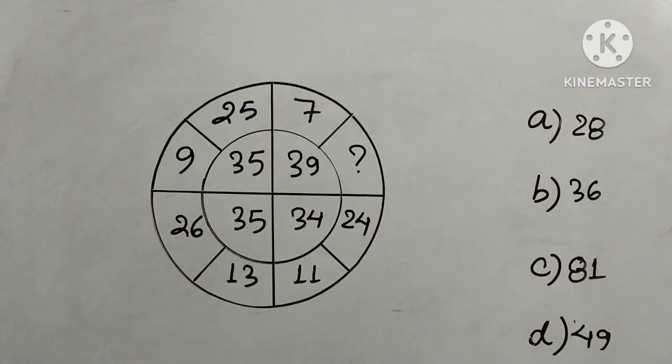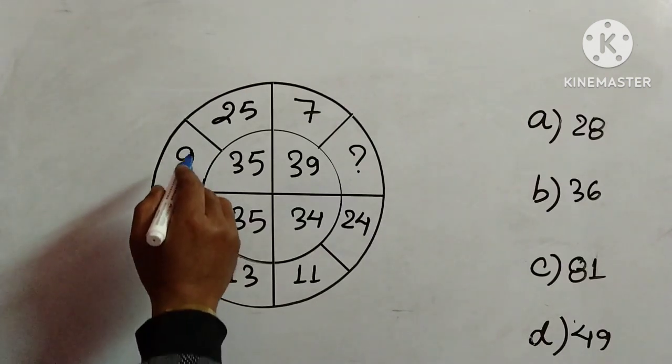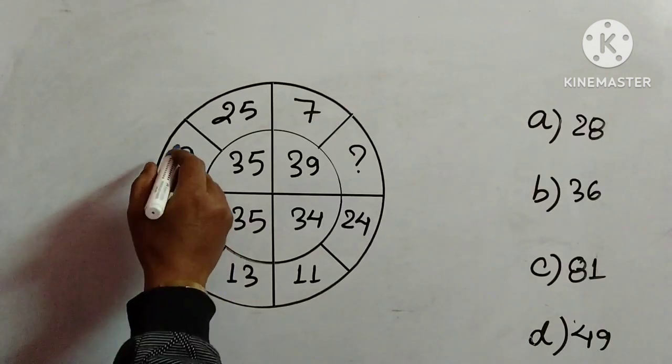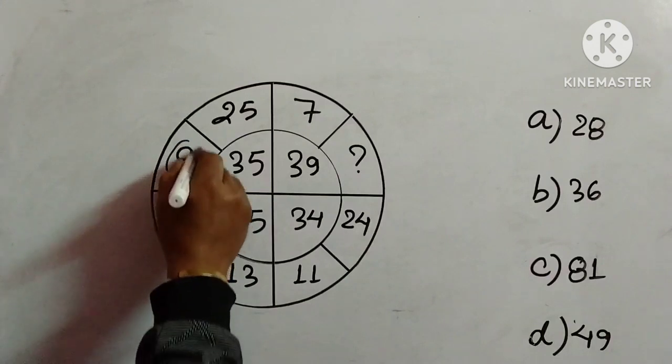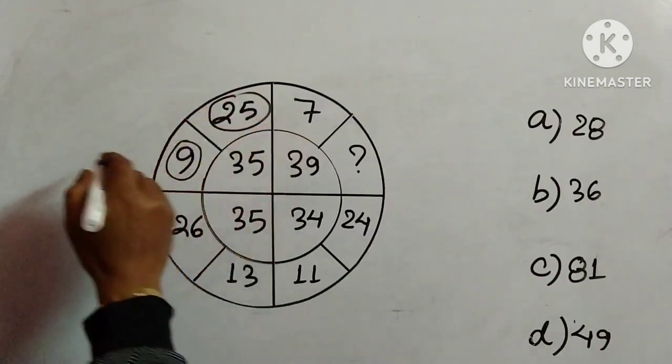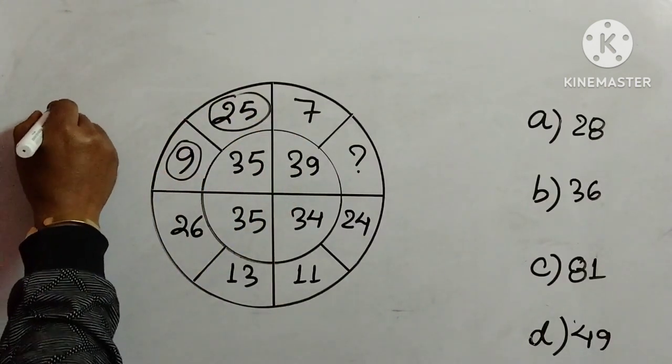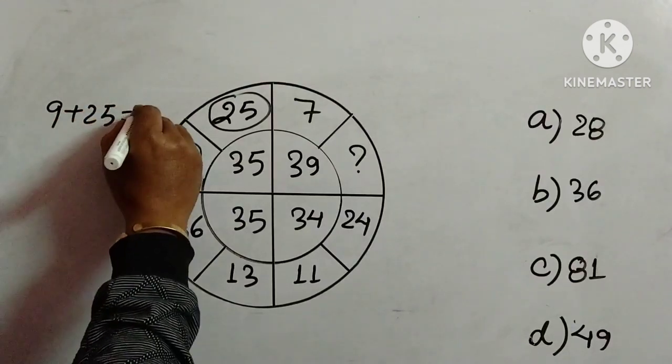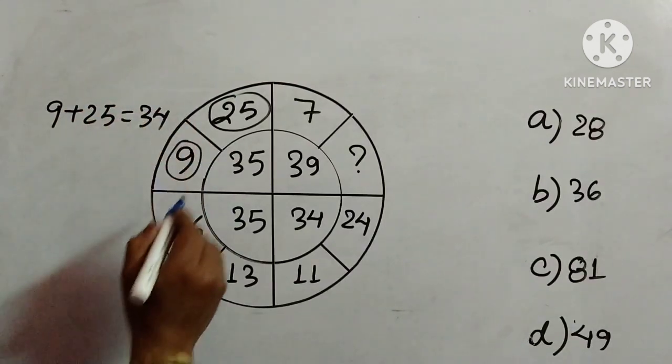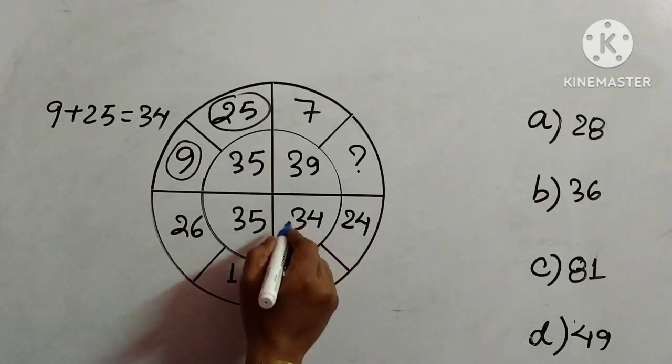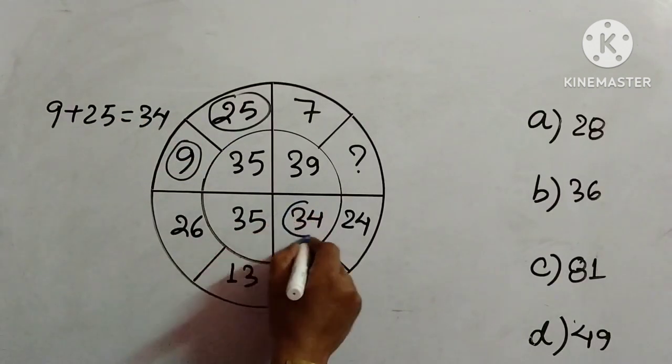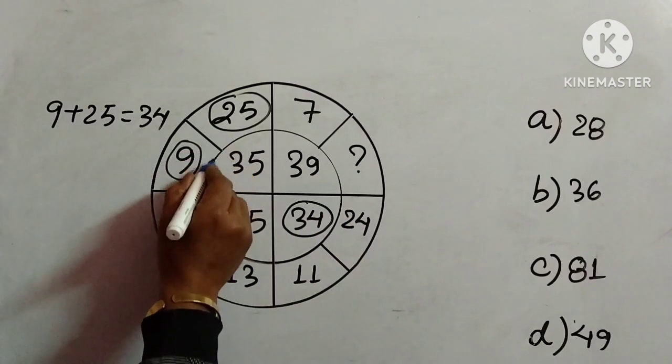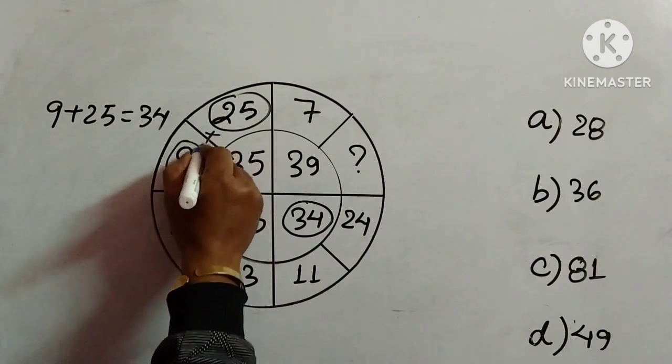Here we will consider 9 and 25. See, 9 plus 25 equals how much? 34. So 9 plus 25 is 34, which is given here. We have added 9 and 25, and the result is given here.